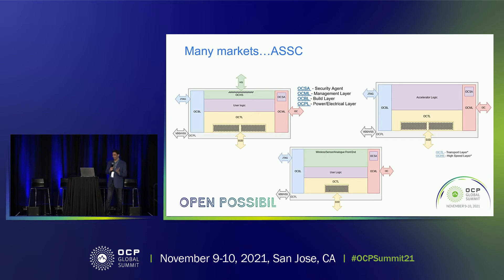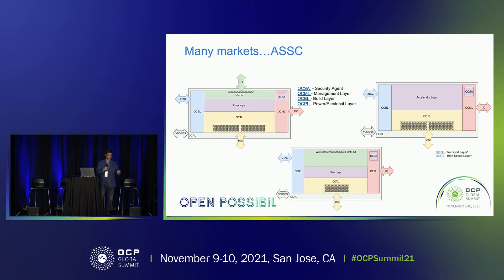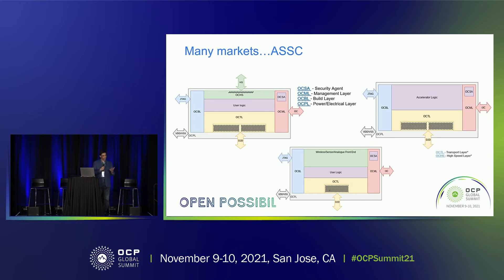By using these kinds of layers, you can serve many markets. I want to introduce a concept of an application-specific standard chiplet. We have ASICs and ASSPs — I think there is a market need for standard chiplets that could be used for multiple markets. As shown here, you can use them for hyperscale, consumer, 5G, and automotive. Any of those could benefit from a simple chiplet that meets all these markets. In the next few slides, I will walk you through these layers.